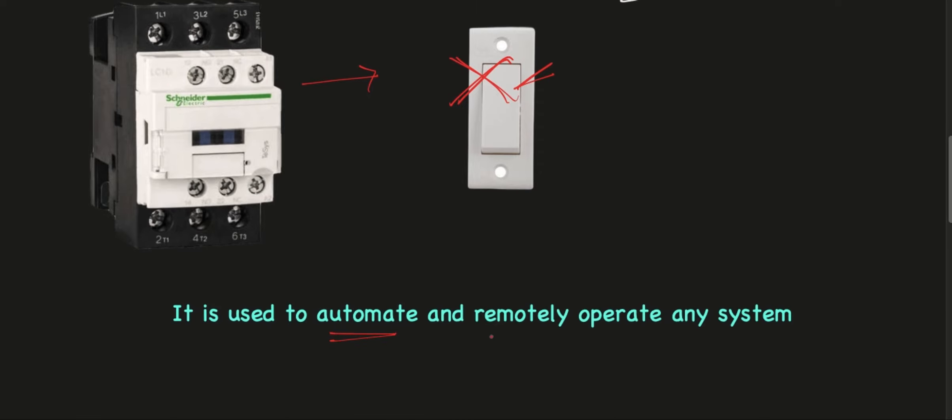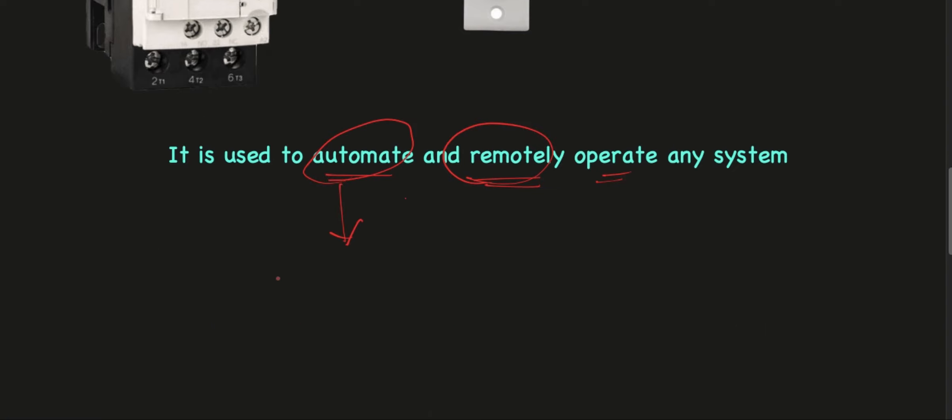Let's understand the word automate and remotely operating a system. Automate means consider any load such as your motor or light or your basic pump, basically any load. We need not manually turn them on or off. We can automate this on and off feature by using a PLC or a relay.